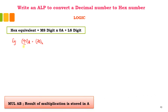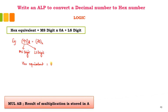This upper digit I am considering as the MS digit — most significant digit — and this lower digit I am considering as the LS digit or least significant digit. All I need to do is multiply the MS digit by 0A and add the LS digit. So the hex equivalent will be 04 × 0A + 05, which equals 2D in hex.